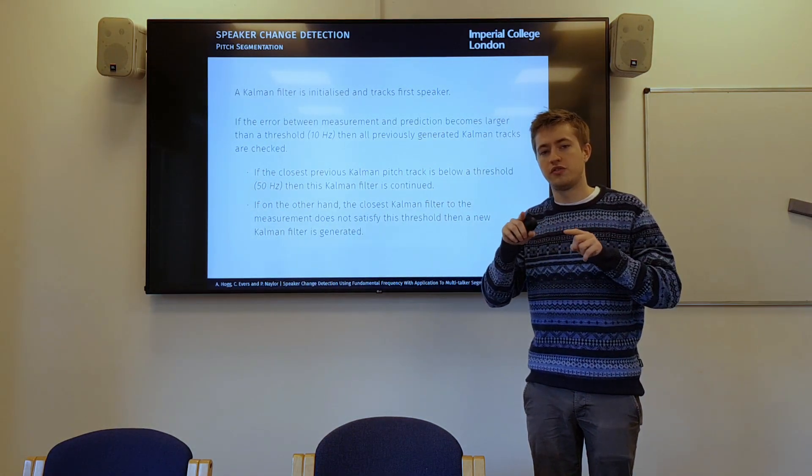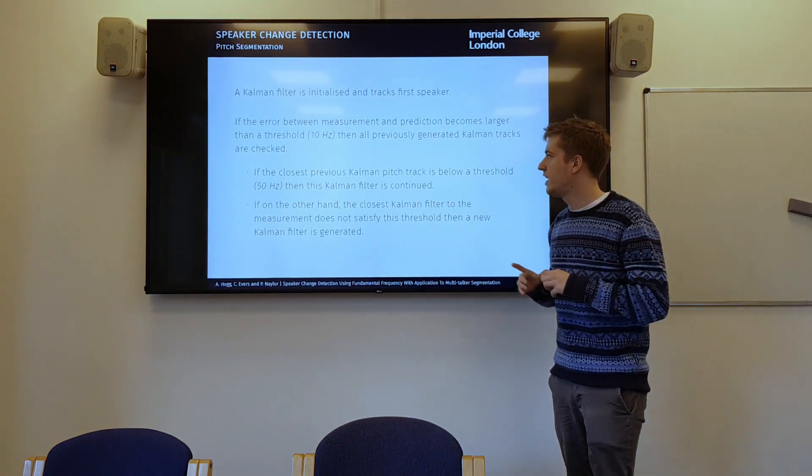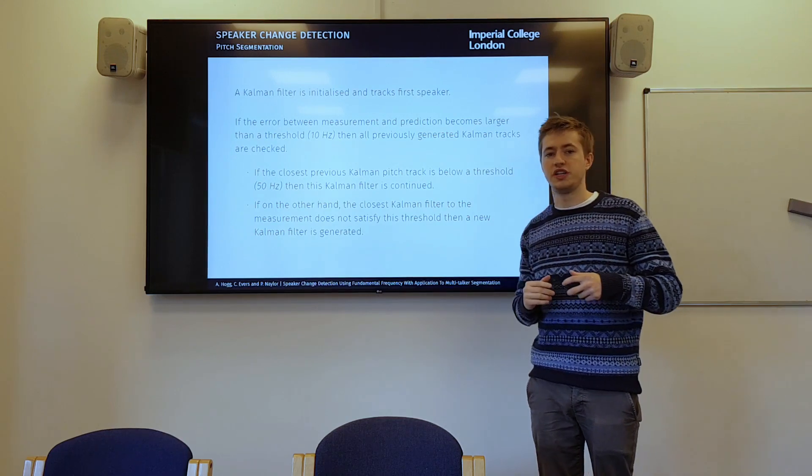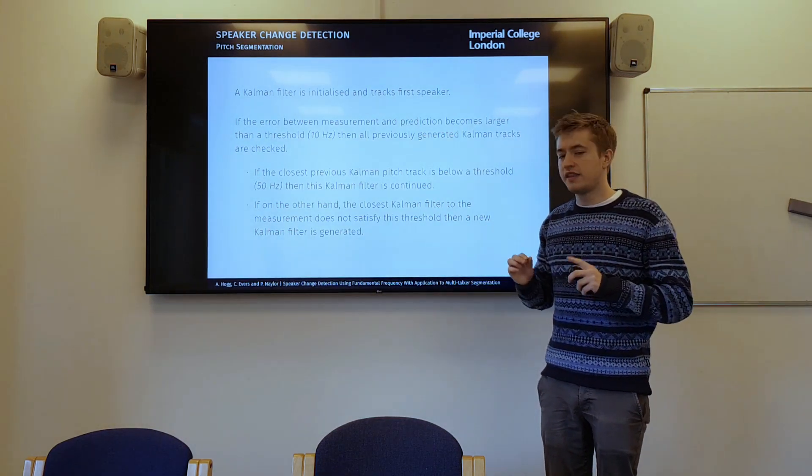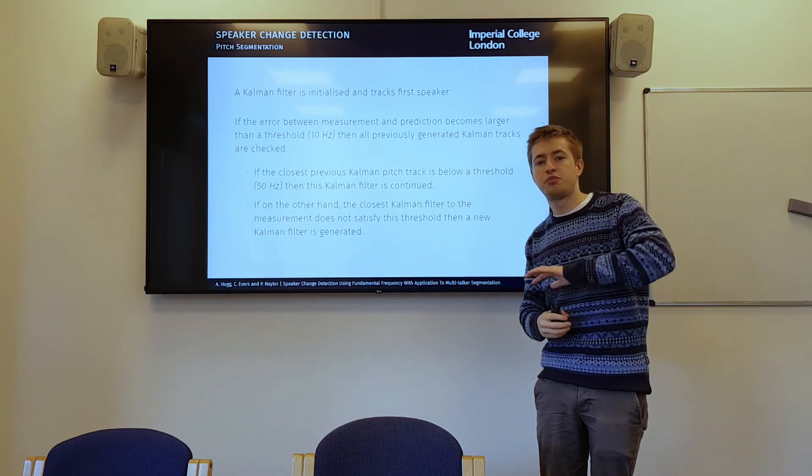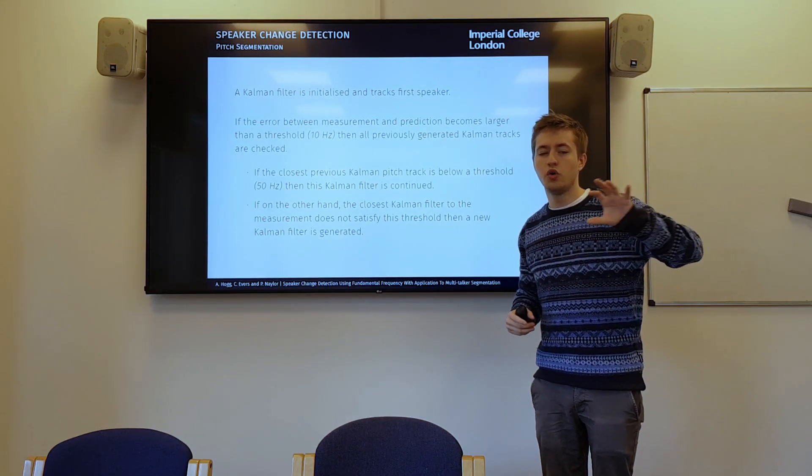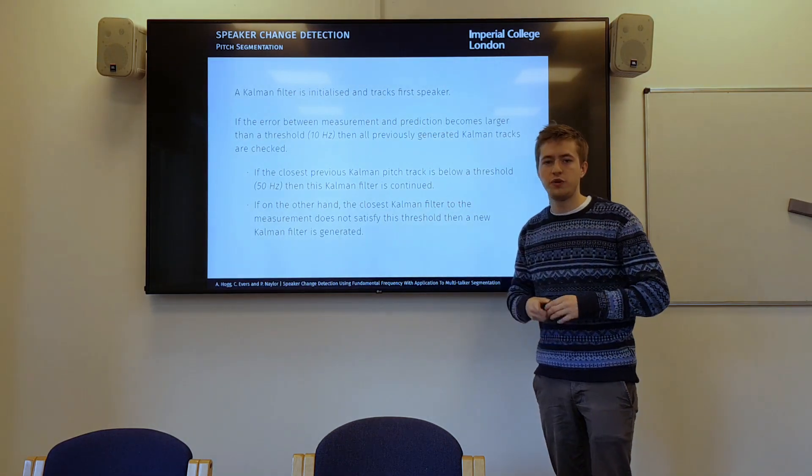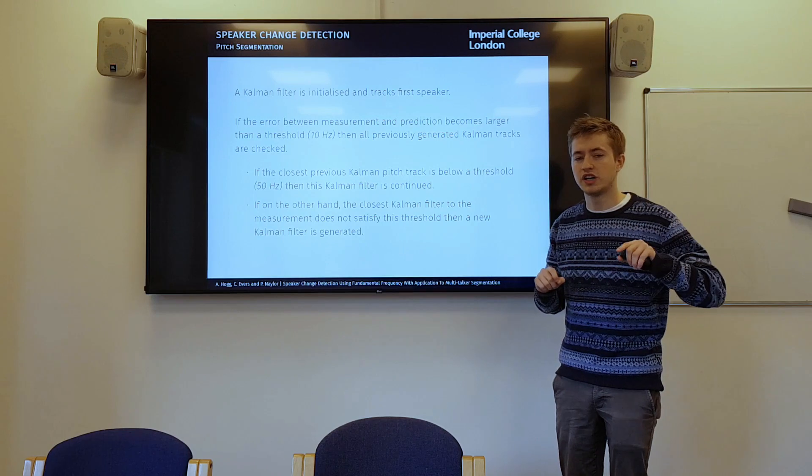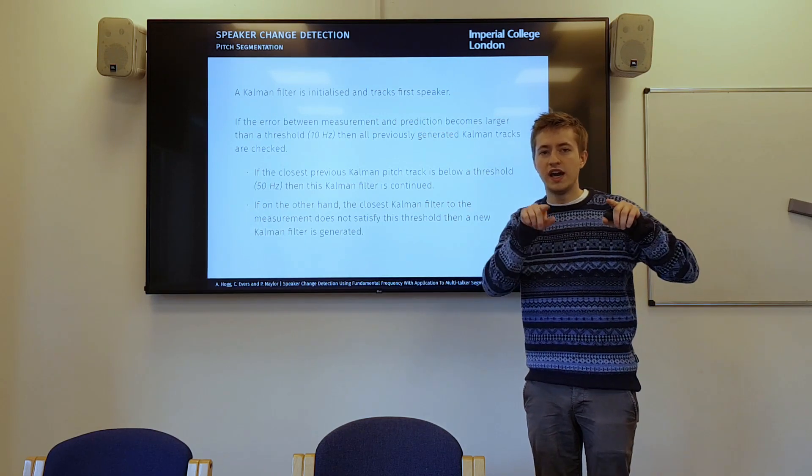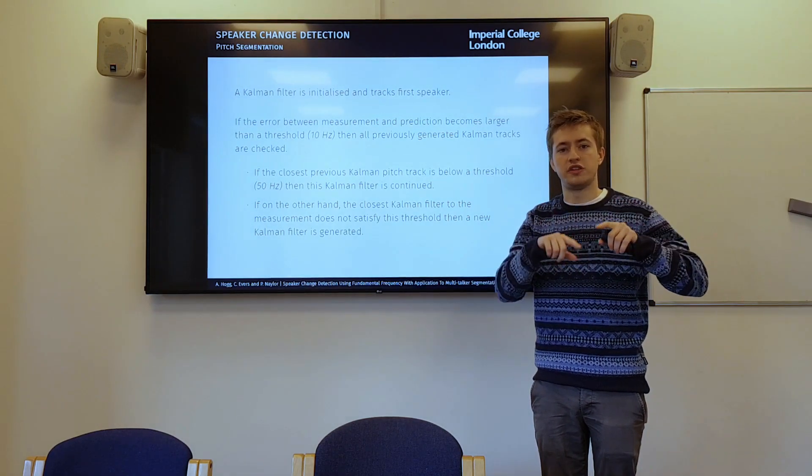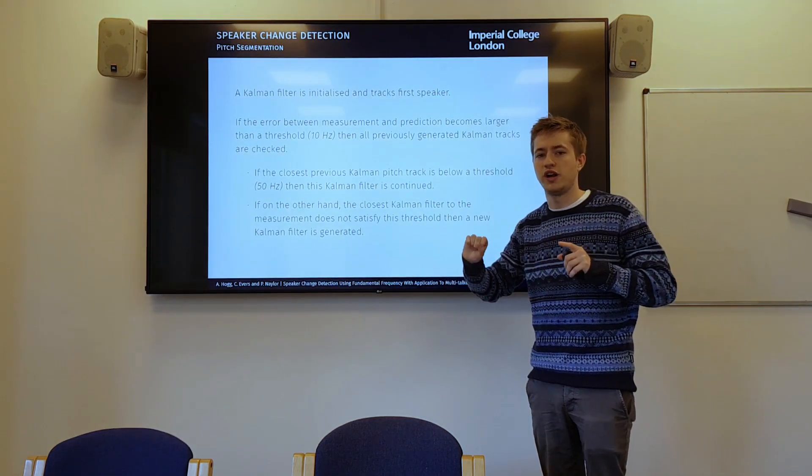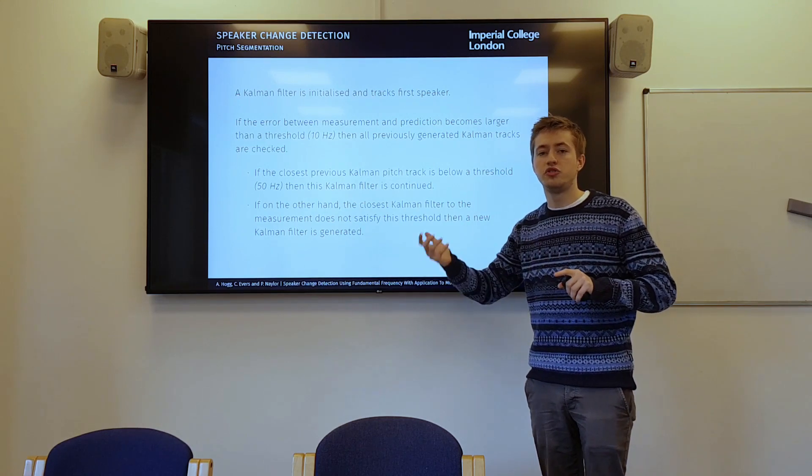So then we have two Kalman filters. We have the first Kalman filter that we've now stopped and we have a new Kalman filter that's now going. And then when we see another speaker change, we see another large error in our prediction based on the measurement we've just seen. Then we want to work out, is this a previous speaker we've seen? Is this the first speaker? Or is this a completely new speaker, a third speaker? And the way that we do that is we just look back at all previously generated Kalman filters, see where they stopped and see, is this a new measurement close to that Kalman filter?